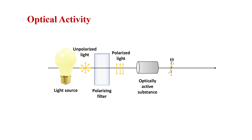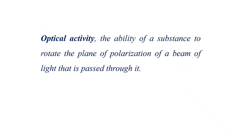Certain substances possess the remarkable ability to rotate the plane of polarized light as it passes through them. This property reveals the molecular chirality and three-dimensional structure of compounds. With the help of an analyzer, you may measure the amount of rotation. Optical activity is the ability of a substance to rotate the plane of polarization of a beam of light passing through it.